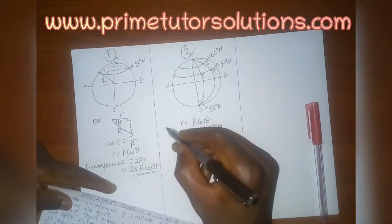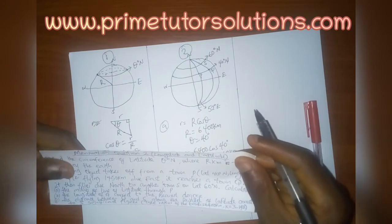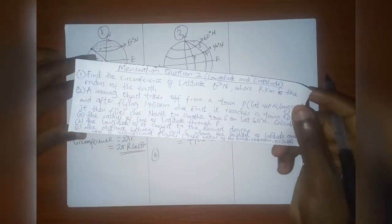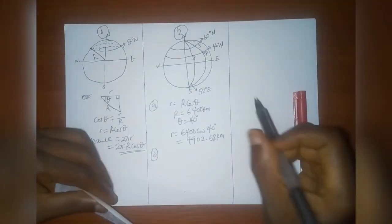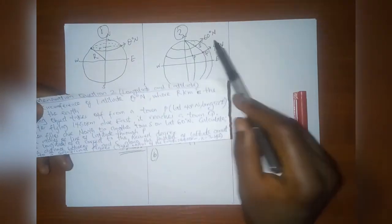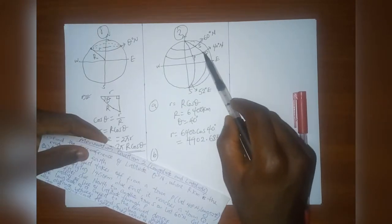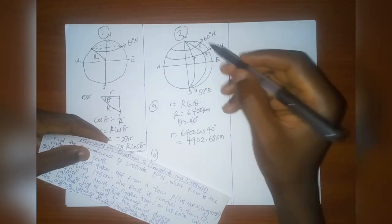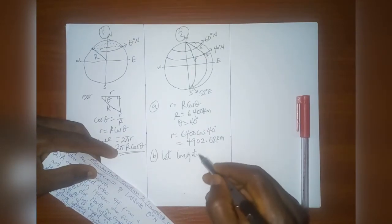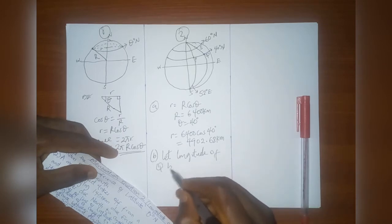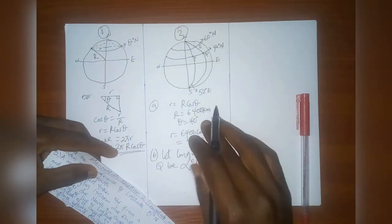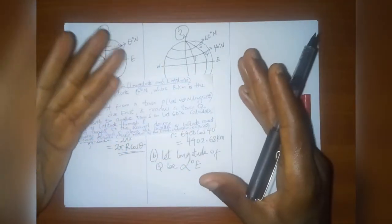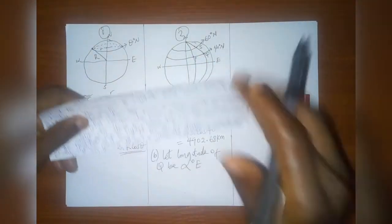Part (b) asks for the longitude of Q, correct to the nearest degree. Q is on the same longitude as S. P is at 52 degrees east. Let the longitude of Q be alpha degrees east — it's more than P's longitude. Since both are on the same side (east), we subtract: the difference in angle is alpha minus 52 degrees.